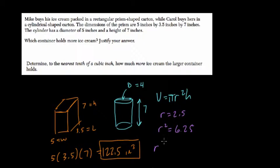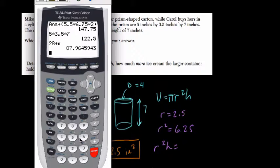And the radius squared times the height equals... well, we have 6.25 times 7, which is 43.75.